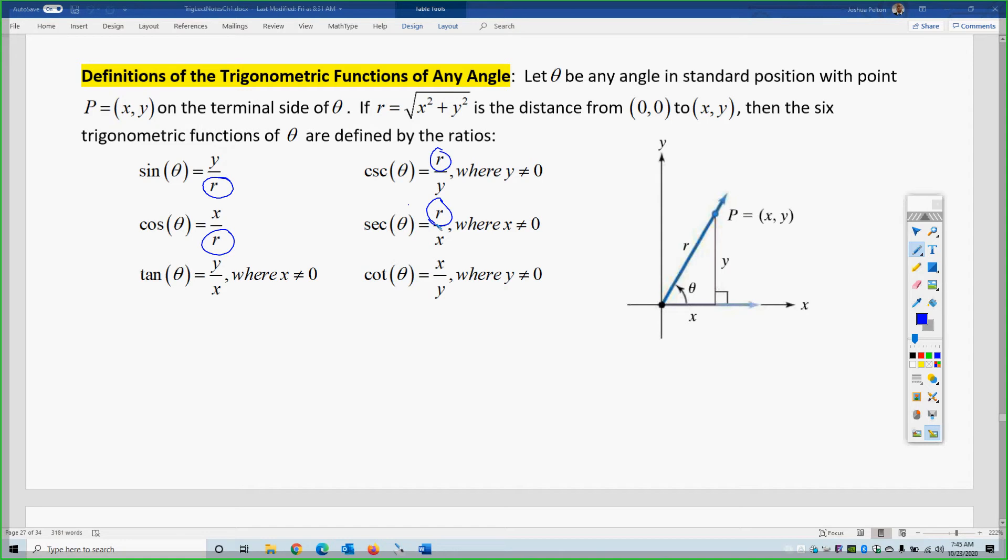Remember, you can get the r using the Pythagorean theorem, because essentially c squared equals b squared plus a squared, or a squared plus b squared. But c is actually r in this case, and the x and y are the legs.